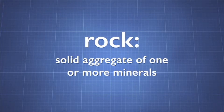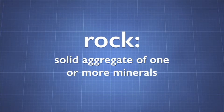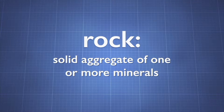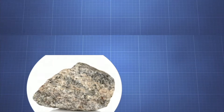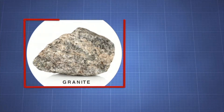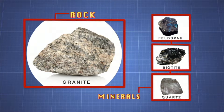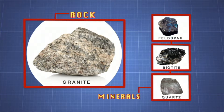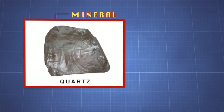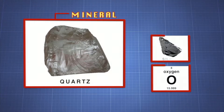A rock is a solid aggregate of one or more minerals. For example, granite is a common type of rock — it is a combination of the minerals feldspar, biotite, and quartz. Minerals in turn consist of an element or compounds made from a number of elements. For example, the quartz in granite is a mineral made up of silicon combined with oxygen.